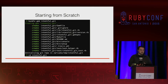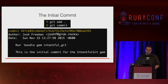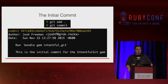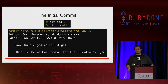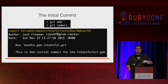Let's do this from scratch. The first thing we're going to do is create a gem — bundle gem intentful-git — and change into that directory. Typically when starting new projects, whether you're running rails new or bundle gem or whatever it is, you're going to have a lot of boilerplate that gets added. Start your first commit there — that's a good place to start with a baseline and build off from there.